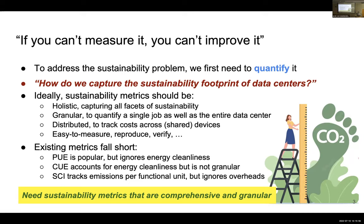As a first step to enable sustainable computing, we believe we need to define the metrics. If we cannot measure it, perhaps we cannot improve it. Today I'm going to answer: what should we measure? Ideally, sustainability metrics should be holistic and comprehensive, capturing not only operational carbon footprint but also embodied carbon footprint, while also being granular, allowing us to capture sustainability costs at different granularities.